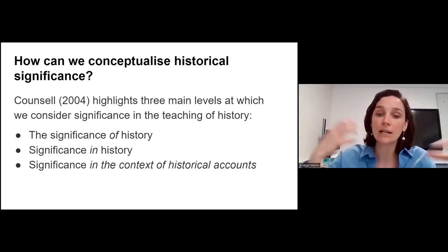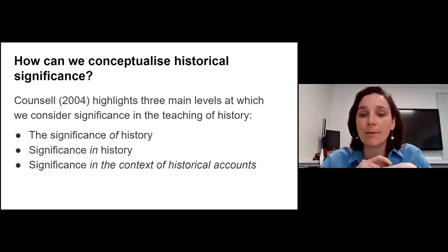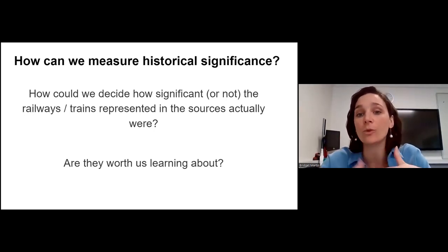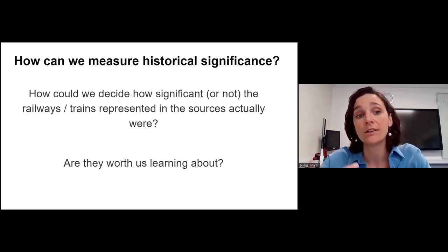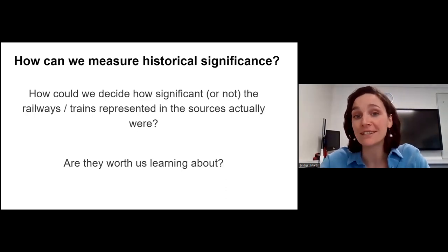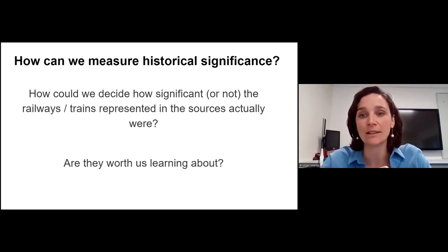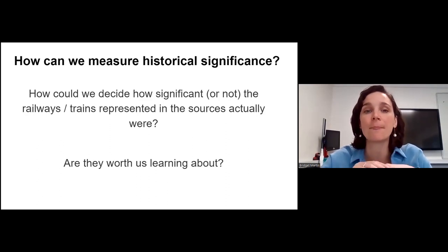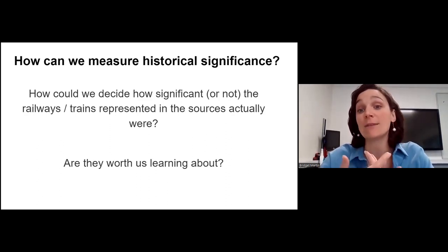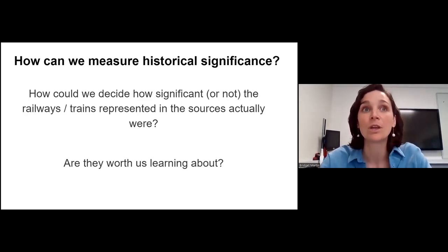With students in the classroom we're particularly focused on those latter two levels. For instance, we might ask: how could we decide how significant the railways represented in the sources actually were? Are they worth learning about? There's also an element of perspective — how different groups might feel differently about the significance of these connections. The key question is how can we actually measure significance if we're going to have discussions with students about it.